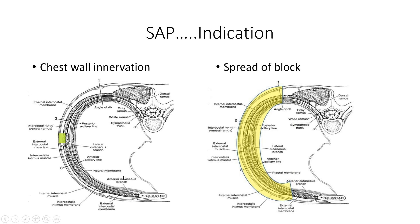For the serratus anterior plane block, the aim of the block is at this plane. Primarily, we block the lateral cutaneous branch. The spread of the block spares the dorsal rami and also the anterior cutaneous branch. By knowing how it spreads, it helps us understand what kind of cases are suitable for the serratus anterior plane block.